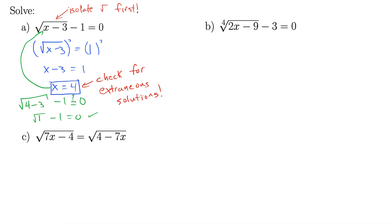Let's take a look at b. We have 4th root of 2x minus 9 minus 3 equals 0. Right? Same idea. We also want to isolate the radical first. We want to do that for all of these. Okay, so let's add 3 to both sides. That gives us 4th root of 2x minus 9 equals 3.